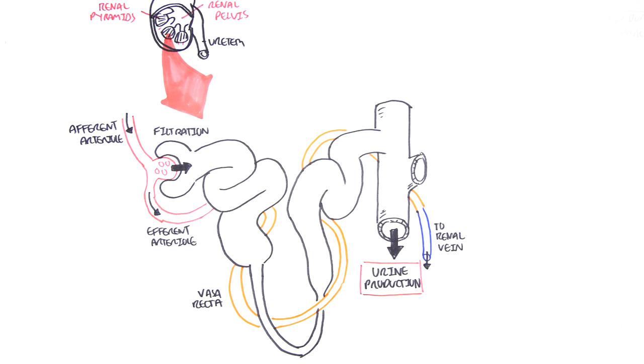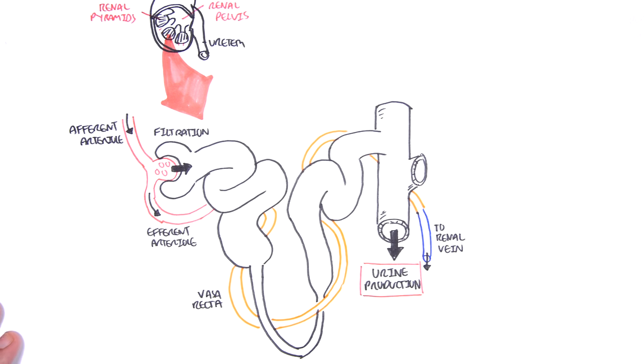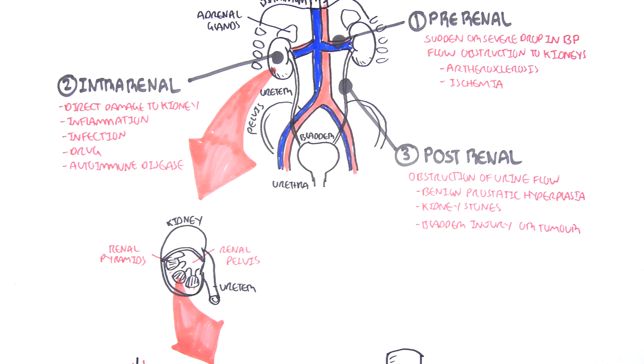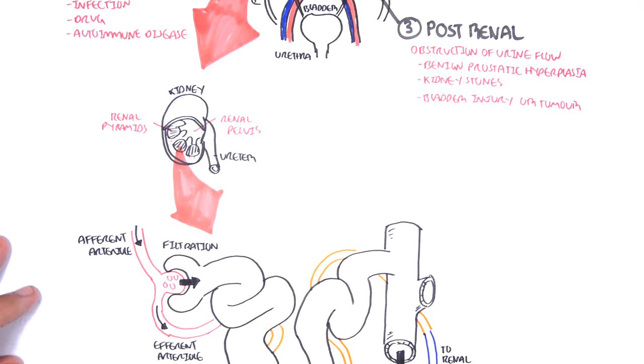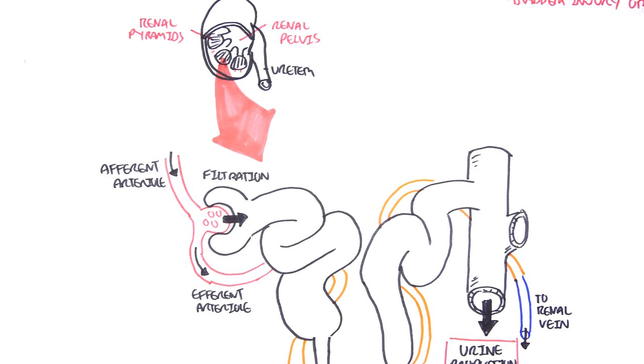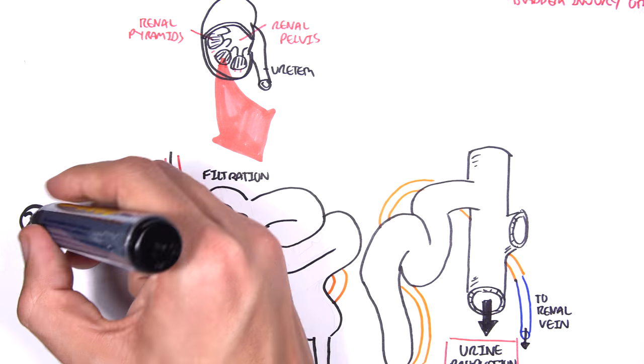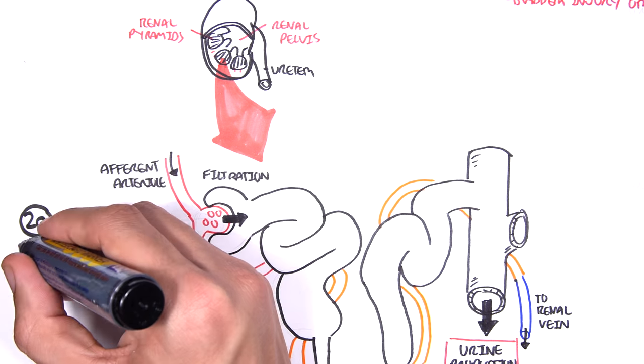Now let's just recap the three main causes of acute renal failure. We have pre-renal, intra-renal and post-renal. We will mainly focus on intra-renal. Now intra-renal, in intra-renal causes, there's actually four main types.